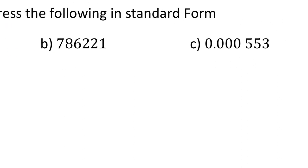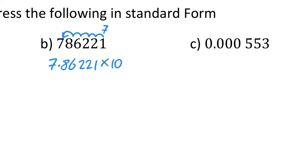For the next one, we're going to make it a number between 1 and 10, so 7.86221. The 7 is now in the units column and it needs to move 1, 2, 3, 4, 5 places, so it's going to be times 10 to the power of 5.